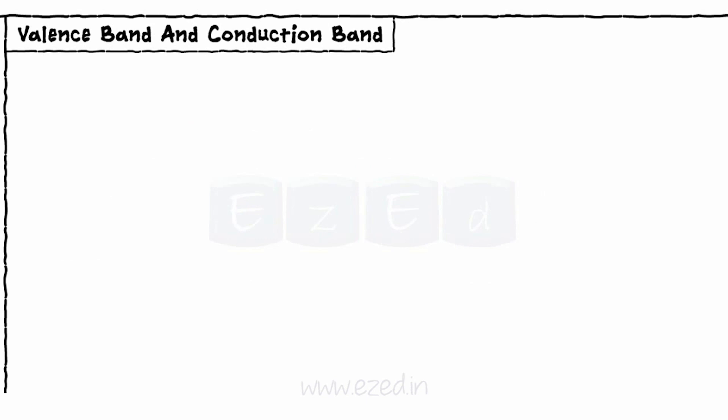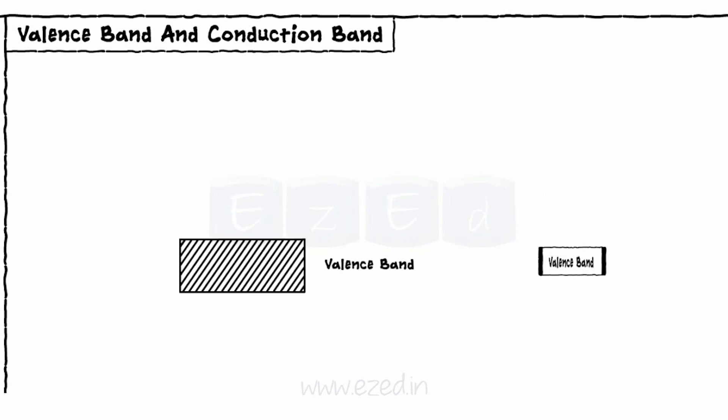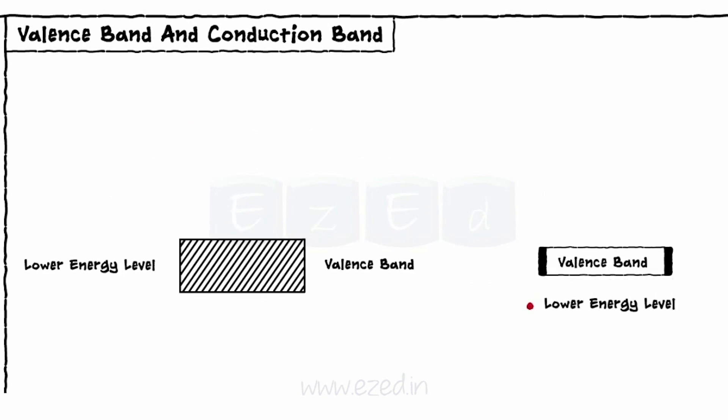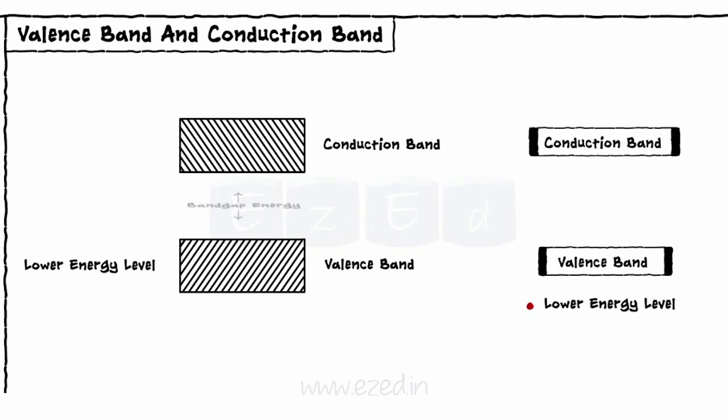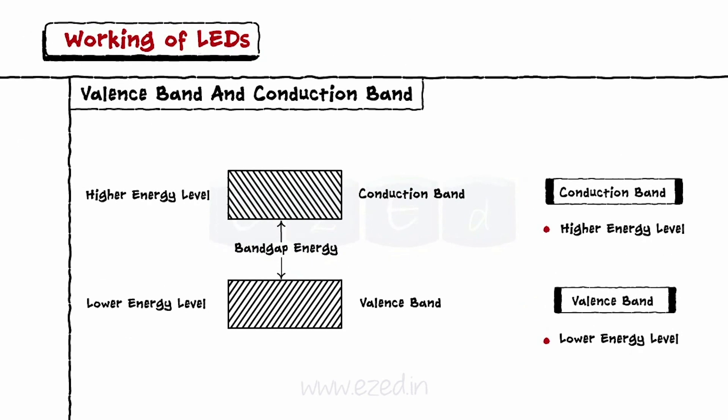To summarize, we can say that the valence band is a band with a lower energy level and the conduction band is a band with a higher energy level.